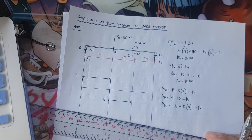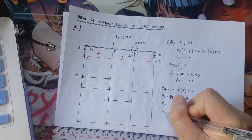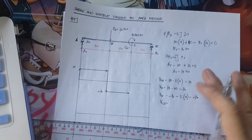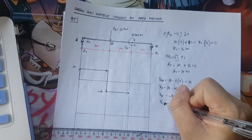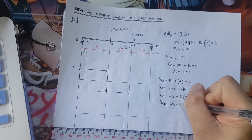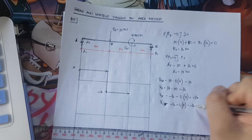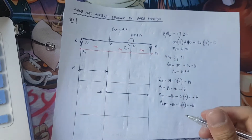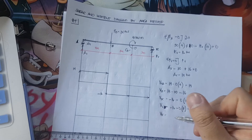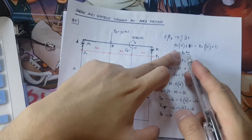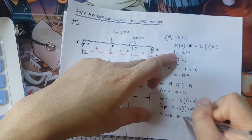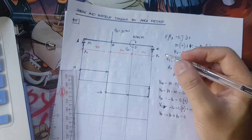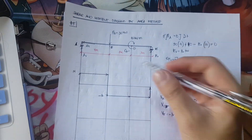Shear C to E: negative 16 minus zero times a distance of 3 is still negative 16, so that is a straight line again. Shear at E: negative 16 plus 16 — which is an upward force — equals zero, so it goes back to zero. This is our shear diagram, with zero-degree (constant) segments throughout.